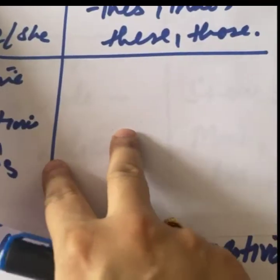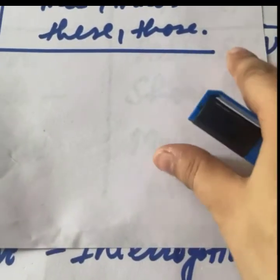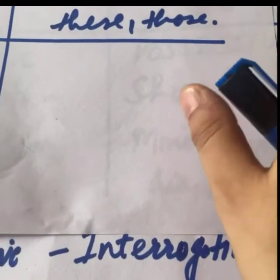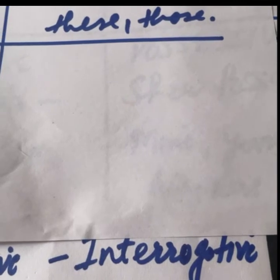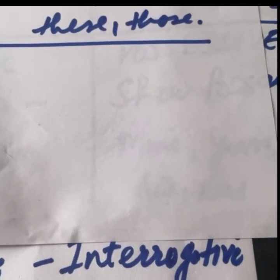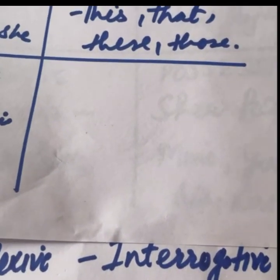Aur humara last type hai demonstrative. Demonstrative ka matlab hota hai kisi cheez ko point out karna — this, that, these, those. For example: 'That book lying on the table is not mine.' So this is pronouns — thank you, class!